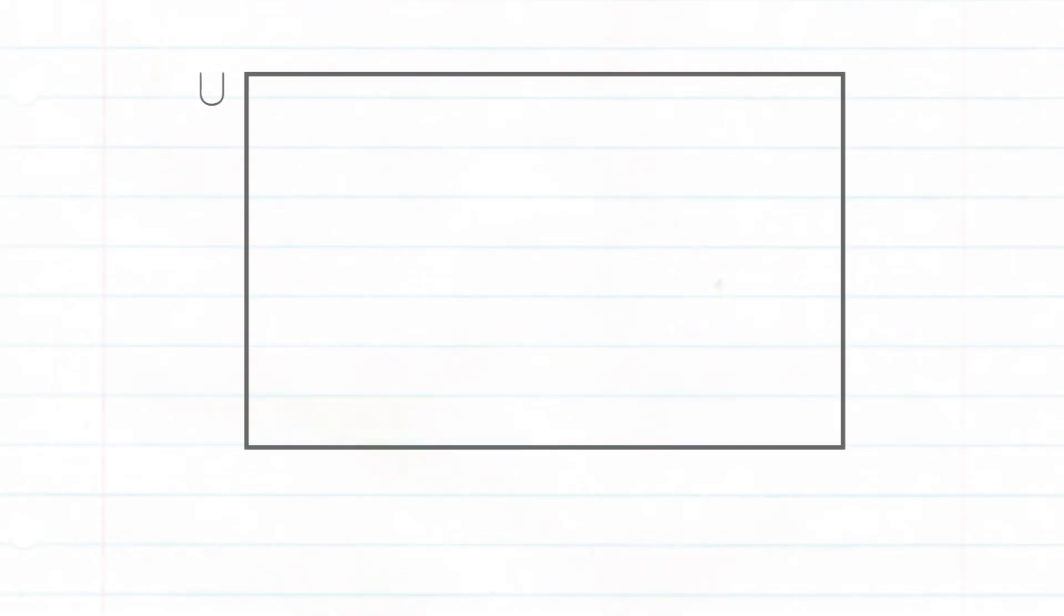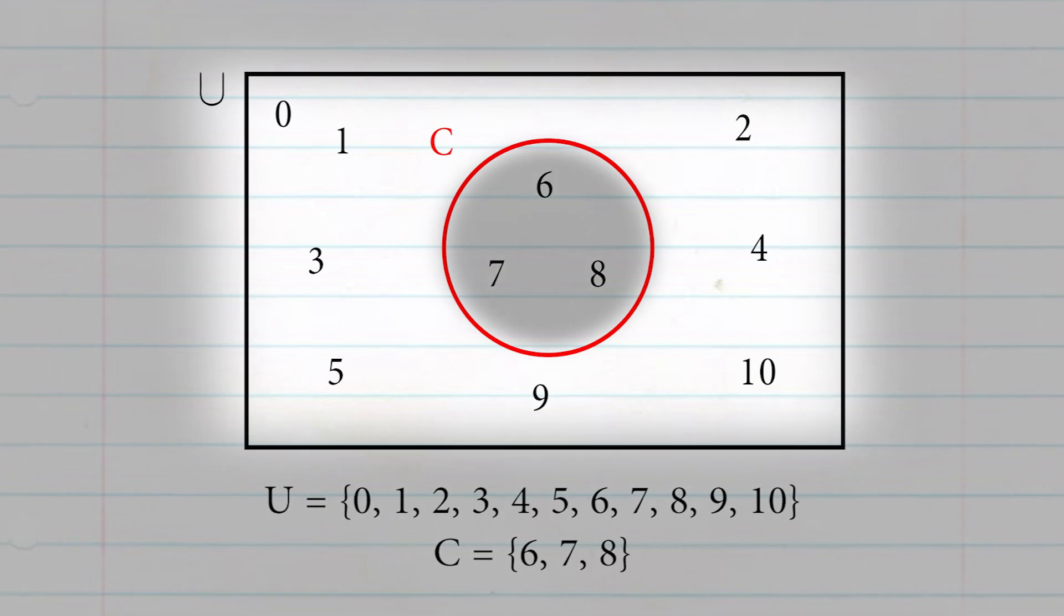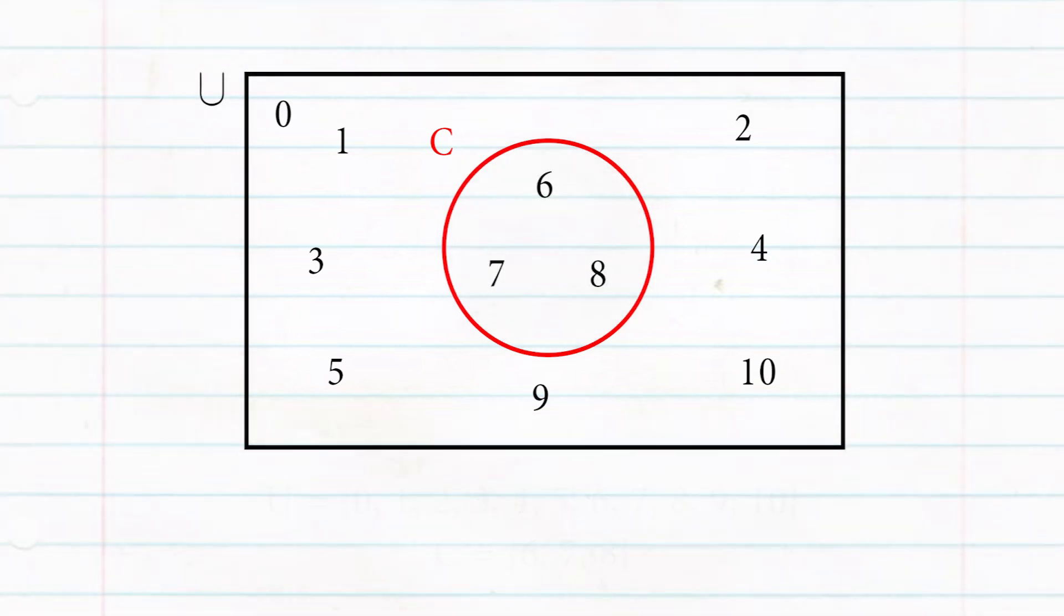Let's say we have a universal set whose elements are the numbers 0 to 10 and a subset C which contains 6, 7, and 8. The complement of set C includes all the elements within the universal set except for those that are also in set C. In simpler terms, it is like subtracting the subset from the universal set.